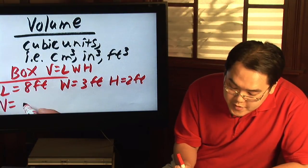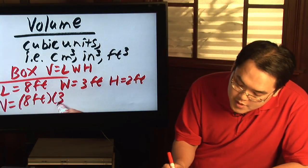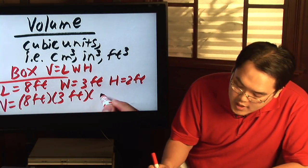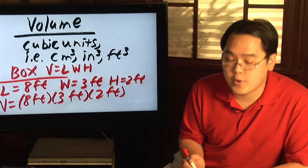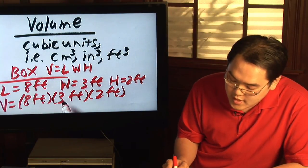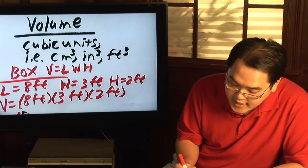The volume of this box is going to be eight feet times three feet times two feet. Multiplying the numbers is straightforward. Eight times three is twenty-four, and twenty-four times two gives you forty-eight.